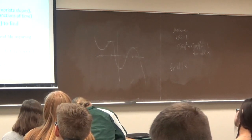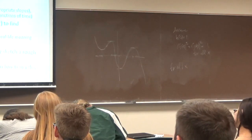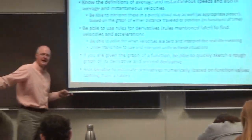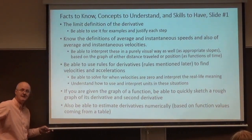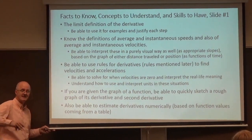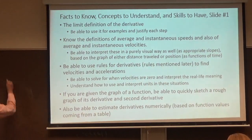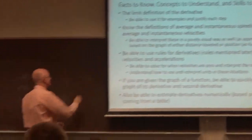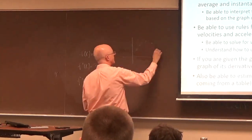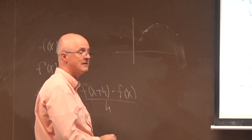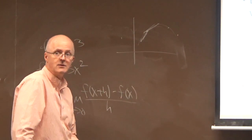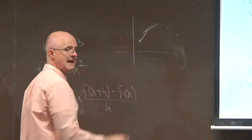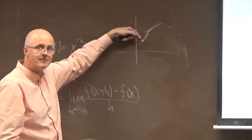Be able to estimate derivatives numerically based on function values from a table. On the old exam I posted there was a problem like that. For interior data points, take the average of the slopes of two secant lines — one to the left and one to the right. For endpoint data points, just take the slope of one secant line since there's only one direction available.